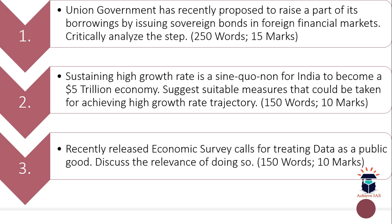The second question is: 'Sustaining a high growth rate is a sine qua non for India to become a five trillion dollar economy — suggest suitable measures that could be taken for achieving a high growth rate trajectory.' The Union Government is aiming to make India a five trillion dollar economy in coming years, so you have to suggest suitable measures in this regard. The word limit is 150 and the maximum marks are 10.